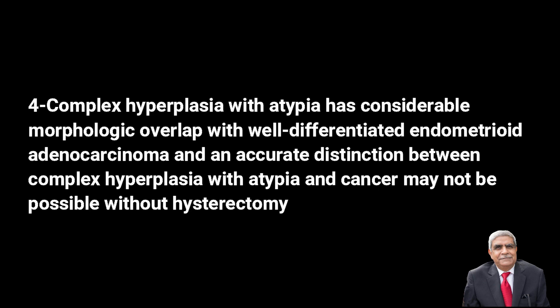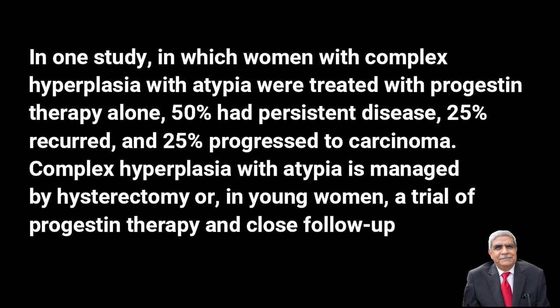The accurate distinction between complex endometrial hyperplasia with atypia and adenocarcinoma of the endometrium may be possible only on hysterectomy specimen. In a study where females with complex endometrial hyperplasia with atypia were treated with progestin therapy alone, 50 percent had persistent disease, 25 percent recurred, and 25 percent progressed to carcinoma. Complex hyperplasia with atypia is managed with hysterectomy, or in young women a trial of progestin therapy with close follow-up.